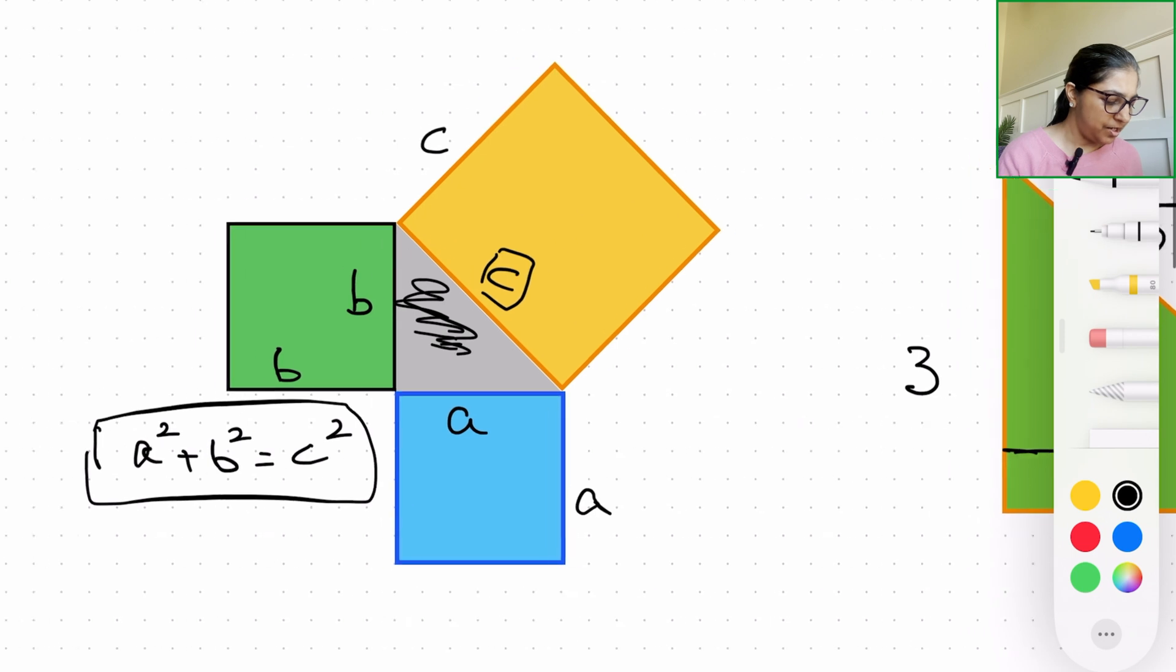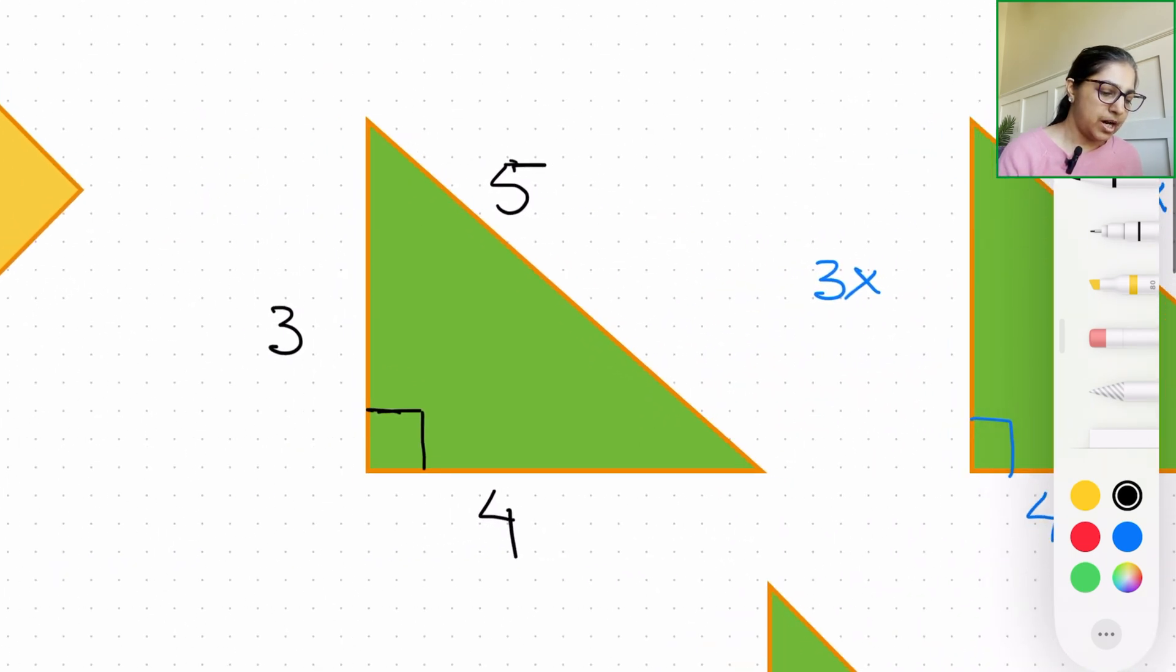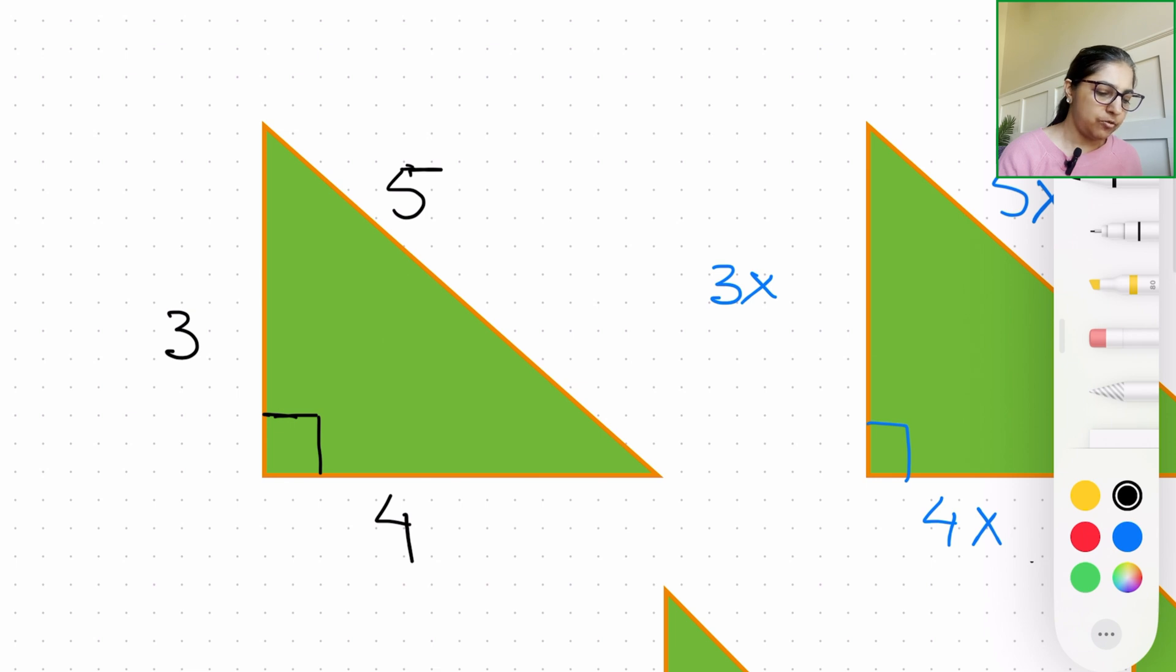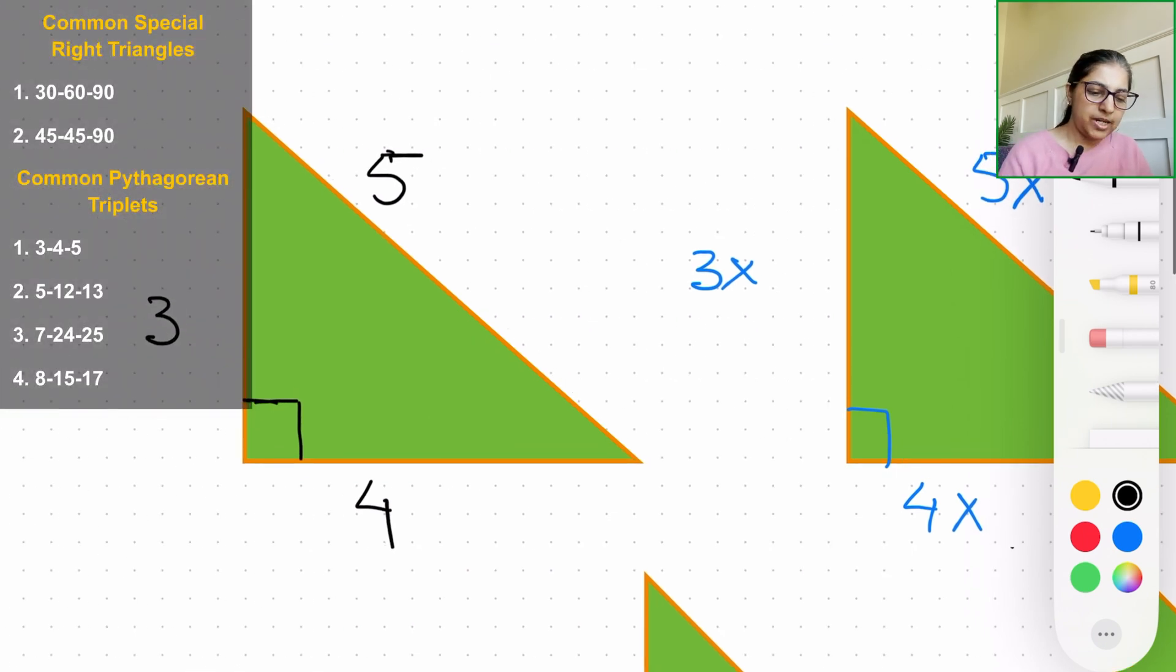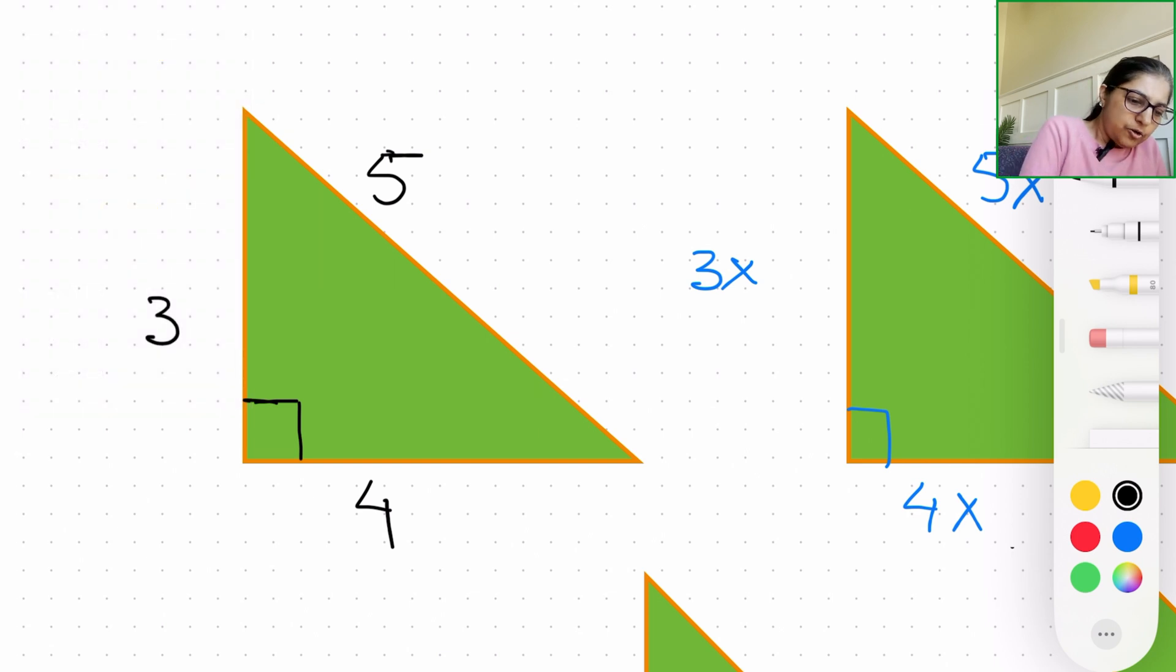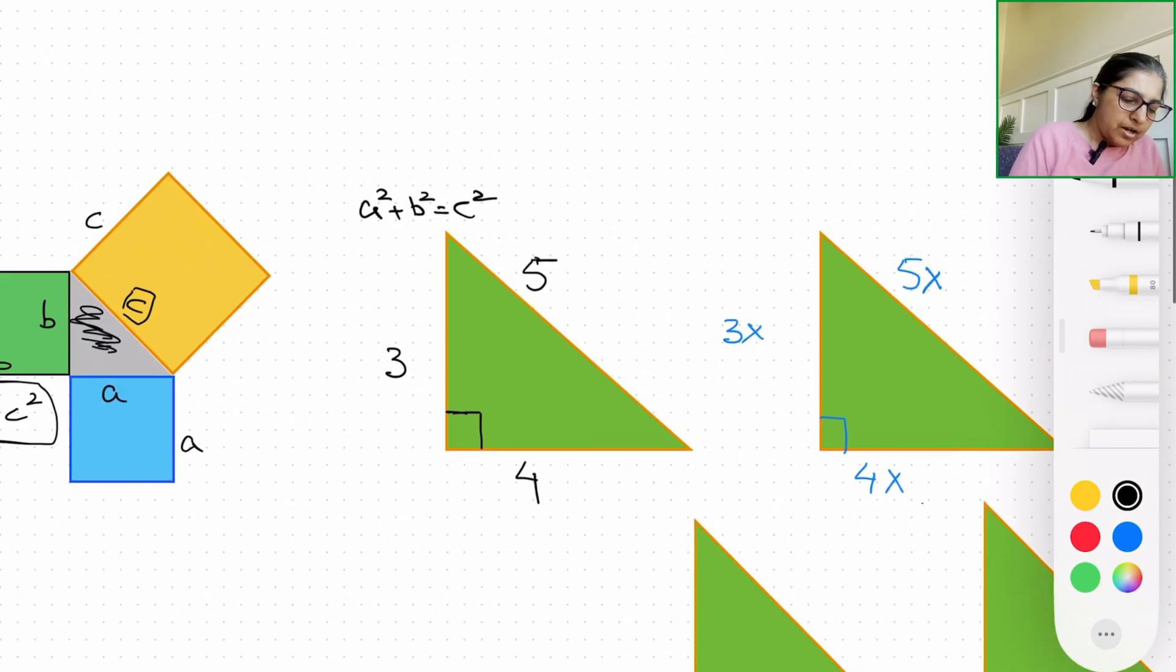Now special right angle triangles are of different kinds. The first and foremost, as you can see, is a 3-4-5 triangle. It's a very common triangle, so it is exactly like this. Now utilizing the Pythagorean theorem, a² + b² = c².